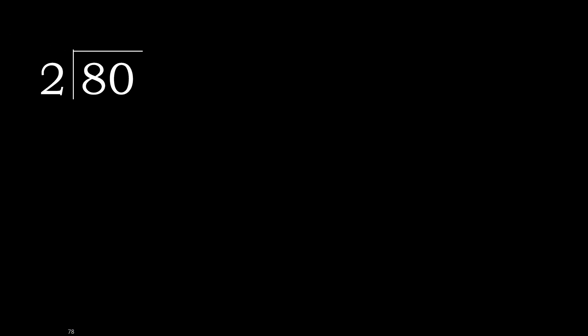80 divided by 2. 8 is not less, therefore work with 8. 2 multiplied by which number is nearest to 8 but not greater? 2 multiplied by 5 is 10 — 10 is greater. 2 multiplied by 4 is 8. 8 is not greater. 8 minus 8 is 0.